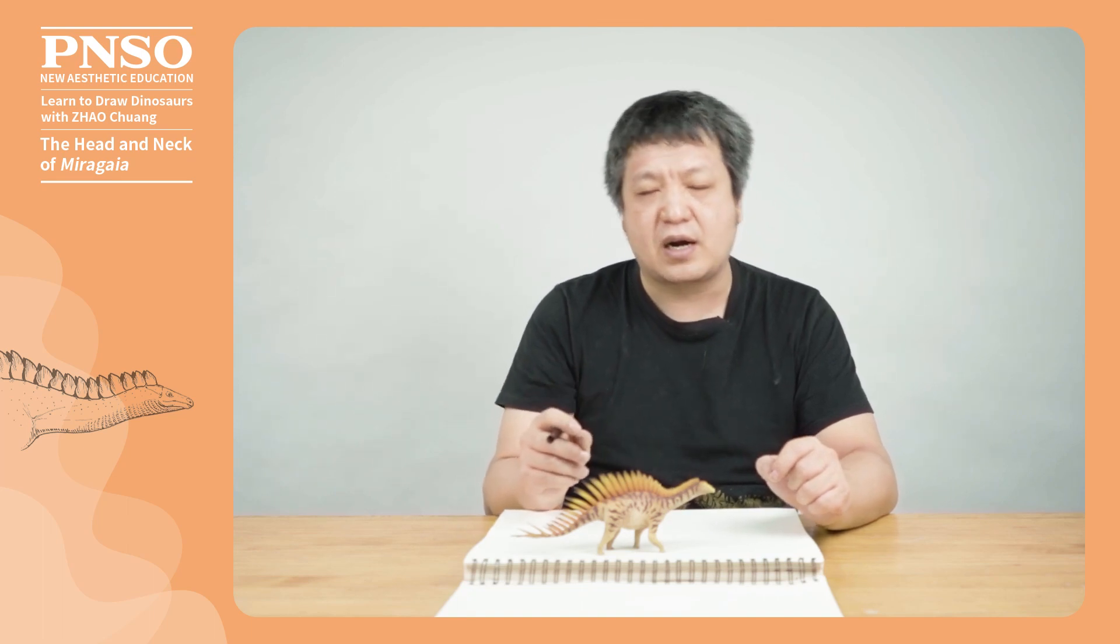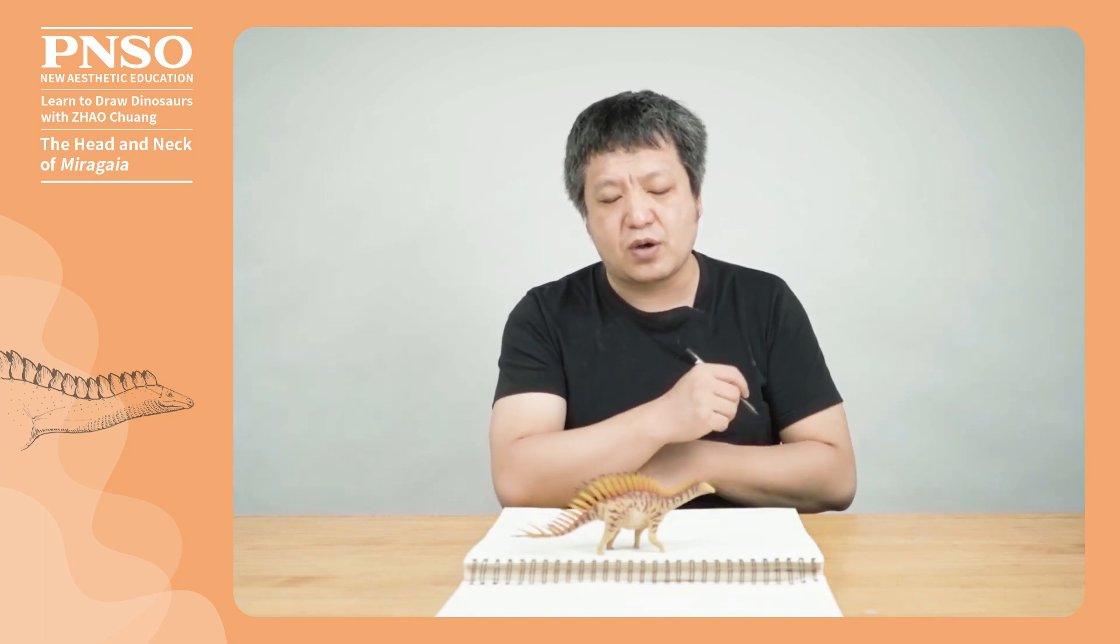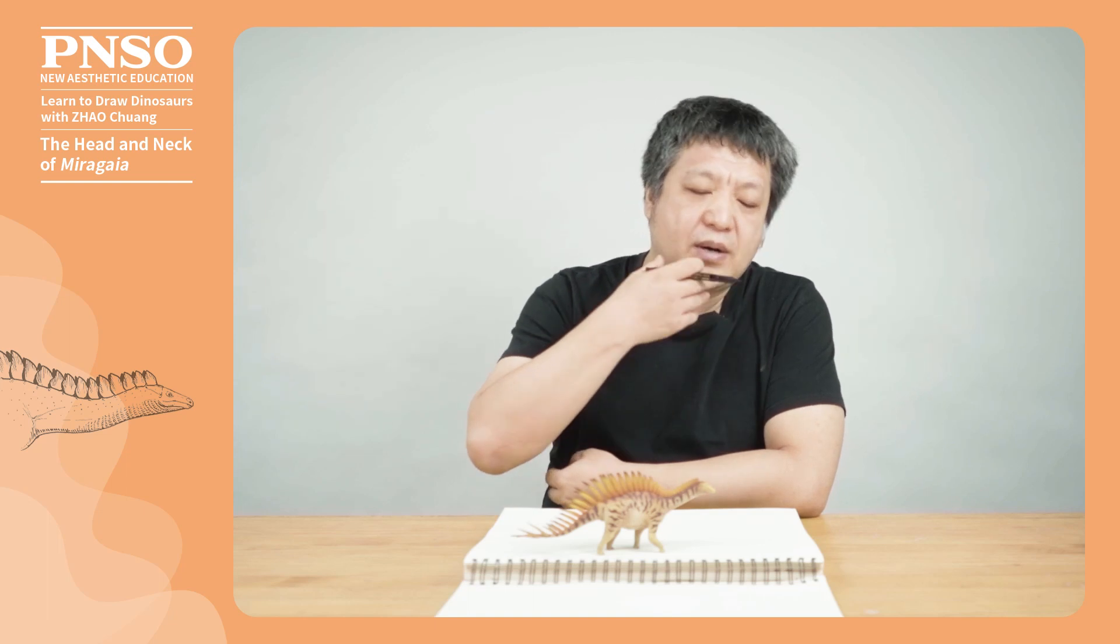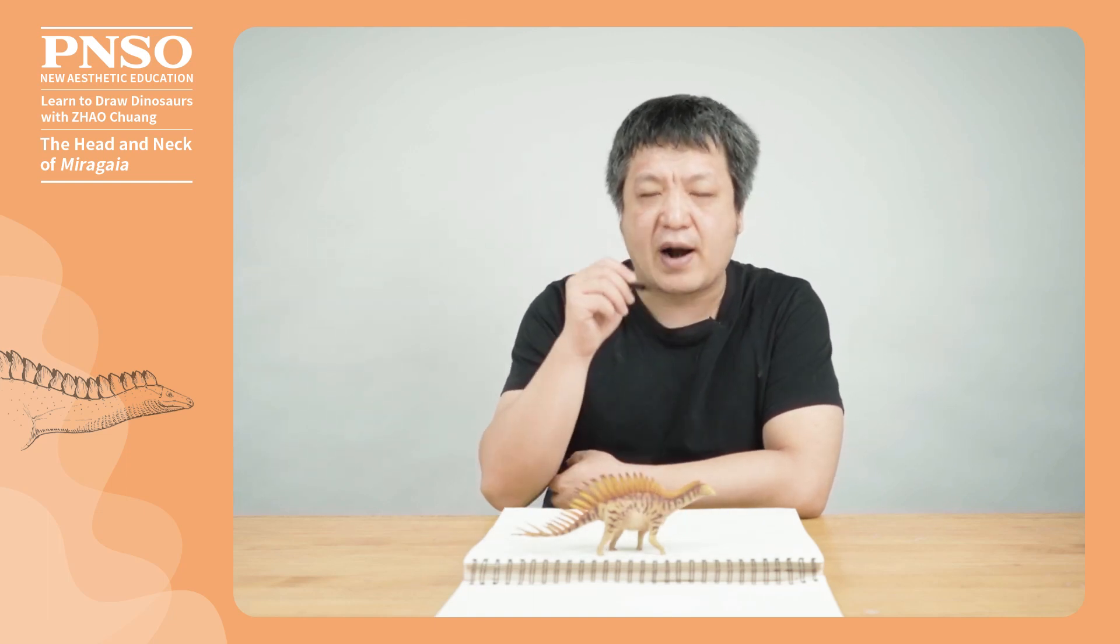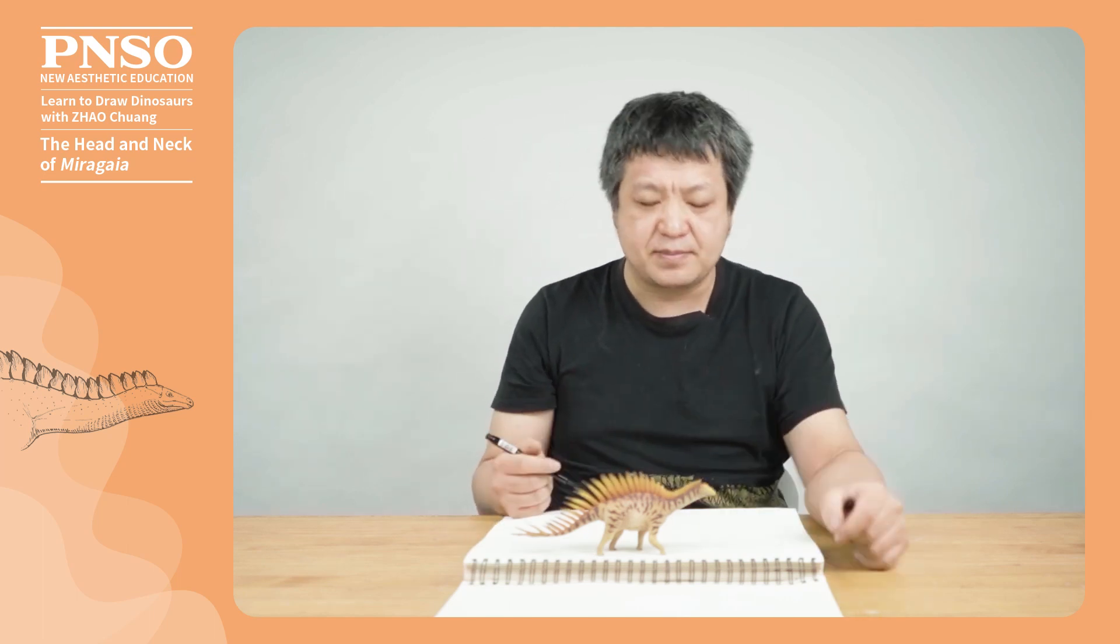In addition, there was a large armor structure under the throat of Miragaia, that is, the gular armor. This armor structure was very complicated. We need to learn how to draw it by using a relatively simple drawing technique.